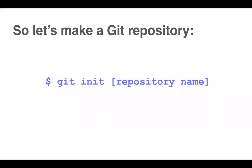You can initialize a git repository using the command git init. When working with git, you need to install Git CLI first.